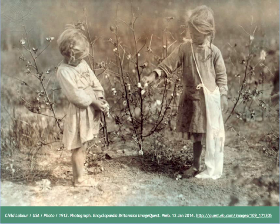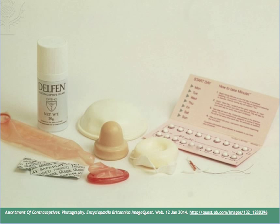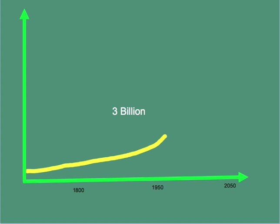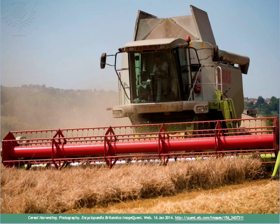But birth rates remained high. People still valued large families. Societies were agriculture-based; many people lived on farms and children could assist with the harvest and other duties. Few if any contraceptives existed and there was no education about family planning and population control. By the year 1950, the Earth's population had reached 3 billion, tripling in just over 100 years. But the food shortage predicted by Malthus was only avoided through the work of Norman Borlaug and other advances in science and technology.